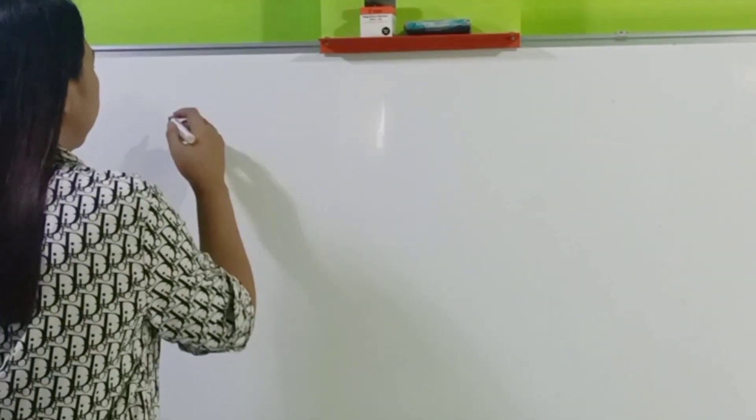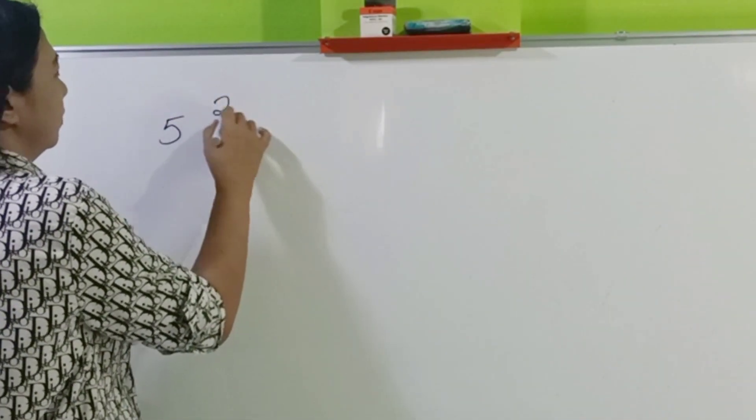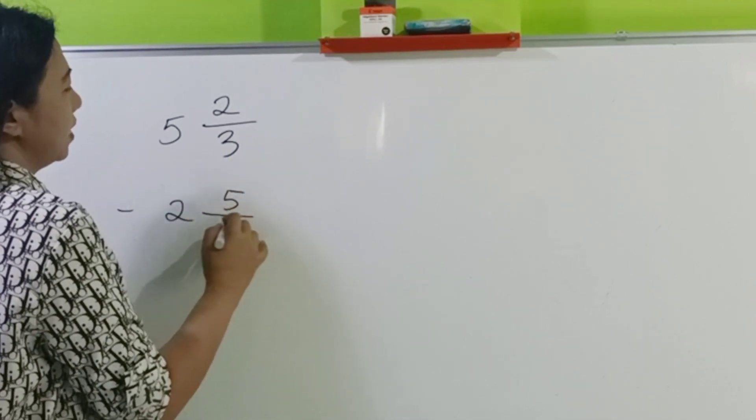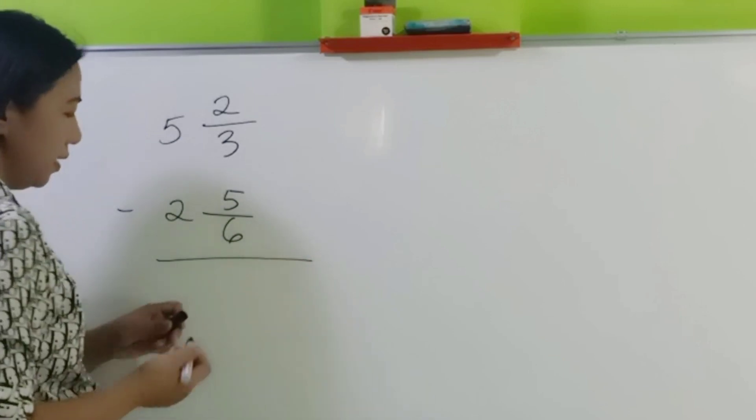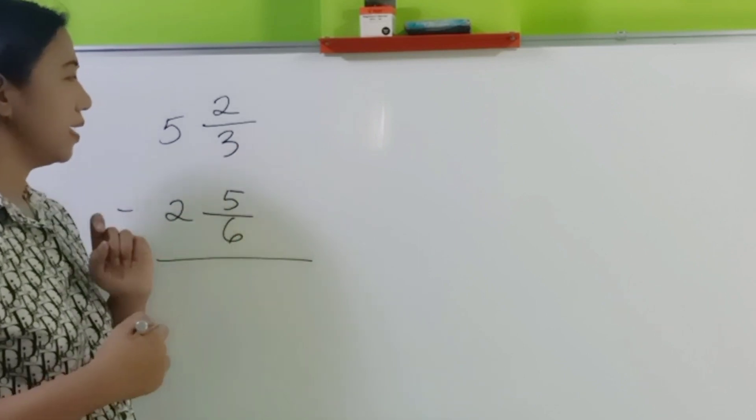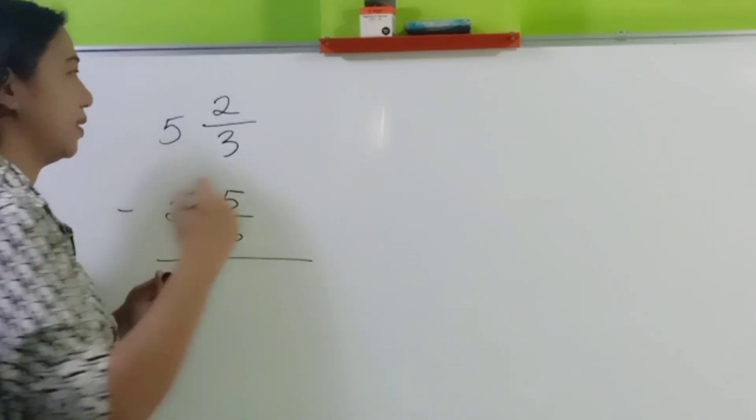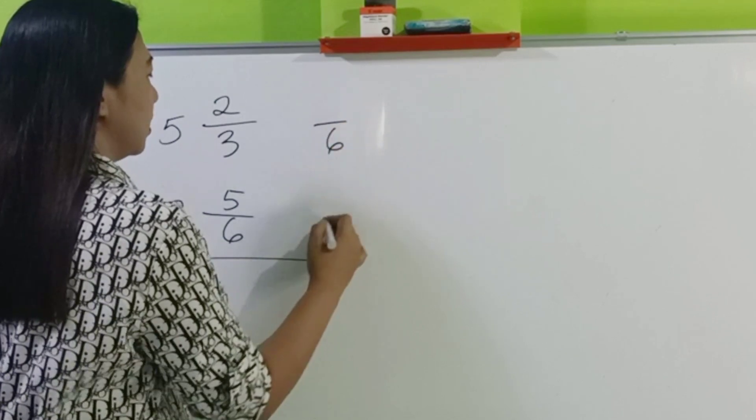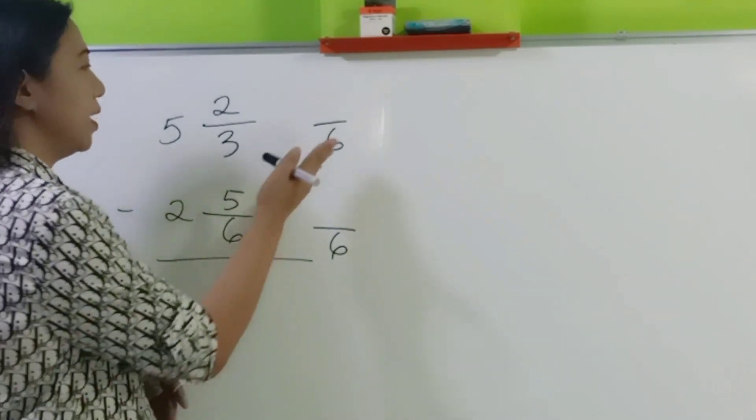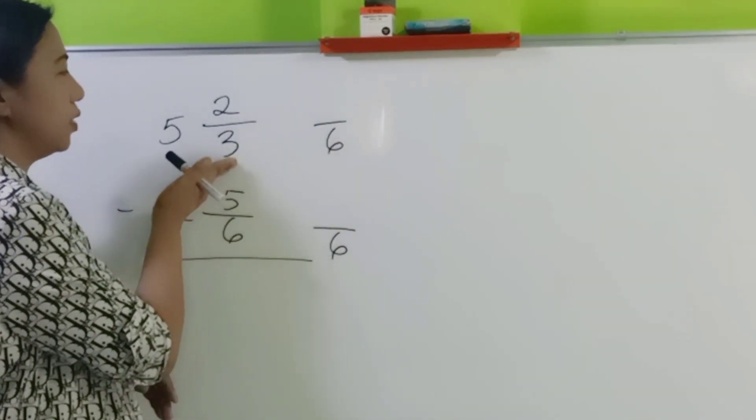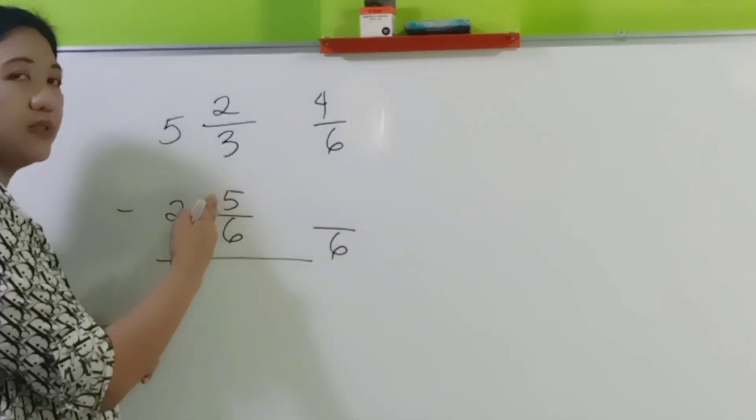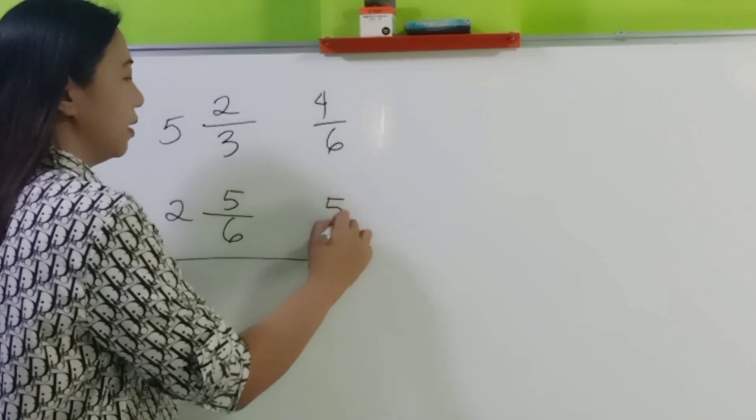We go to another example. 5 and 2 thirds minus 2 and 5 sixths. Step 1. Find the LCD. What's the LCD of 3 and 6? It is 6. So 6. And then change the fractions into their similar forms. 6 divided by 3, 2 times 2 is 4. 6 divided by 6, 1 times 5 is 5.